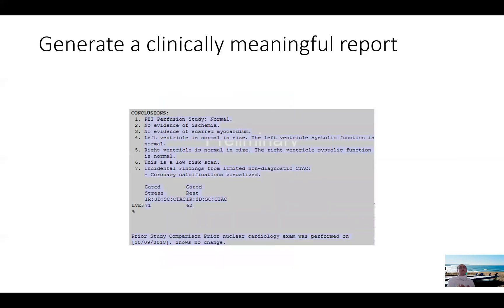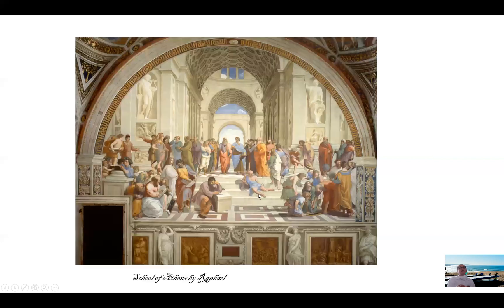Finally, this is how the conclusion should look like. It has all the parameters you need to look at. Normal study, no ischemia, no scar, normal EF, normal LV size, normal right ventricular size and function. This is a low risk scan. Patient has normal calcification and we compare the study to a prior study. So this is the important piece of information that the referring doctor is interested in. This has a lot of not only useful information, it has all the prognostic information you need to know about the study right in one single place. Thank you so much and see you with the next video.